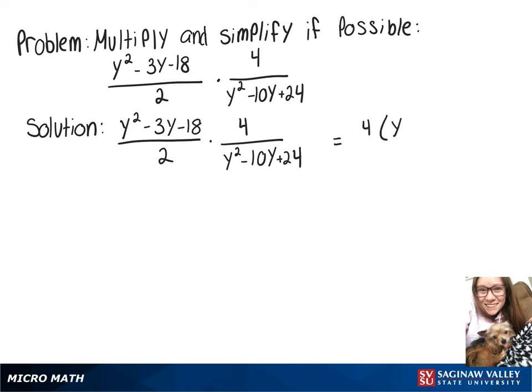giving us 4 times y squared minus 3y minus 18 over 2 times y squared minus 10y plus 24.